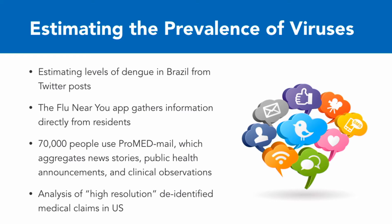Another project has been looking at the highly detailed data that comes from de-identified medical claims in the US, tracking diseases by what people are actually going to their doctor for. All of these approaches allow you to estimate the prevalence of a disease — whether by using naturally occurring data through Twitter posts, getting more specific by asking people directly, asking professionals, or looking at specific reports of when people visit their healthcare providers.